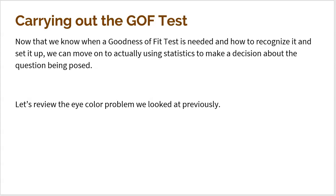Now that we know what a Goodness-of-Fit Test is, when it's needed, how to recognize it, and how to set it up, we can move on to actually using statistics to make a decision about the question being posed. This is very similar to Step 3 of our previous tests with proportions or means, which was to find a test statistic — to get that Z-score or T-score. That Z-score is super important because it tells us how far our sample value is from the mean.